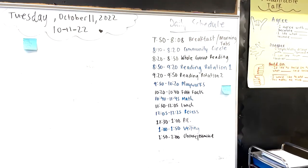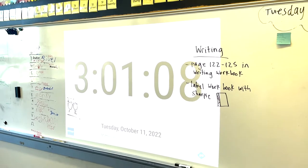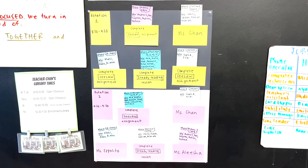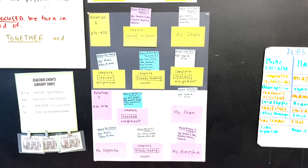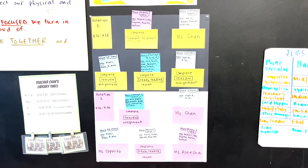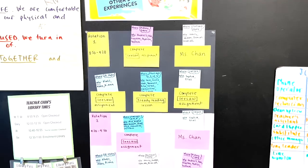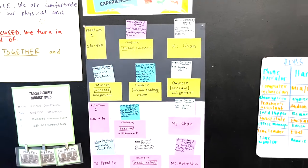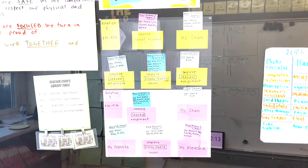Our daily schedule is always posted on the board, as well as the clock, so students can keep track of time. In the morning we have three reading rotations. The first rotation is a whole group lesson. Then we rotate where students are spread out across the room working on different things. This is how they keep track of what they should be doing.